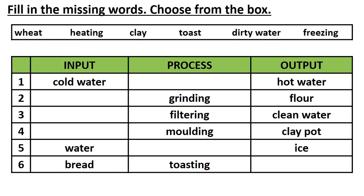Fill in the missing words. Choose from the box. Some IPO cycles are given with missing words, and kids need to fill in the IPO cycles with the words from the box. For the first question, in the input cold water is given and in output hot water is given, so under process kids need to write heating. For question number 2, under process grinding is given and output is flour.